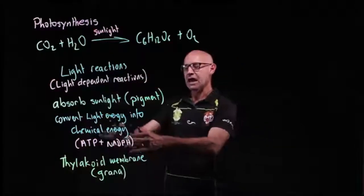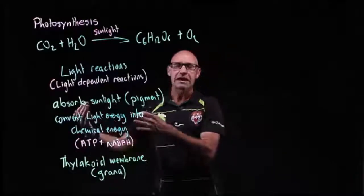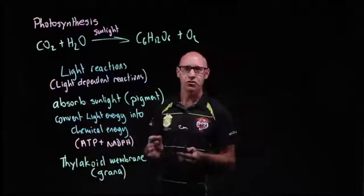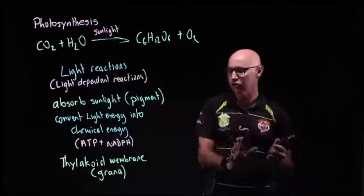Once the chemical energy, the ATP and the NADPH, is being produced, it then passes into the stroma, that liquid, where the second lot of reactions occur.